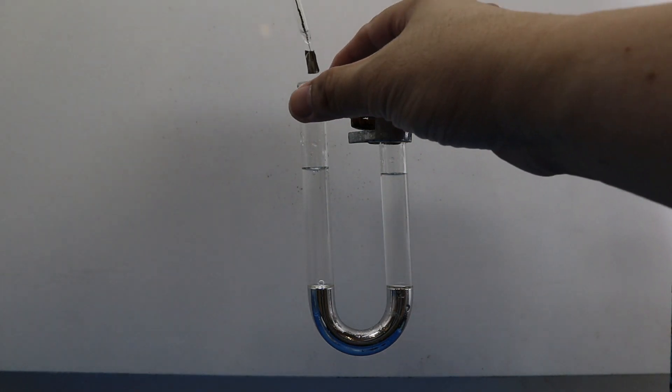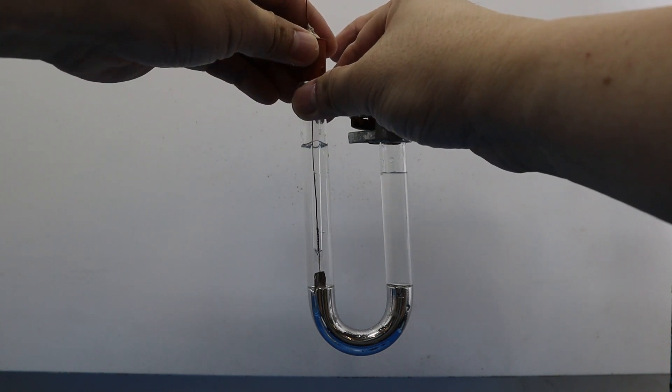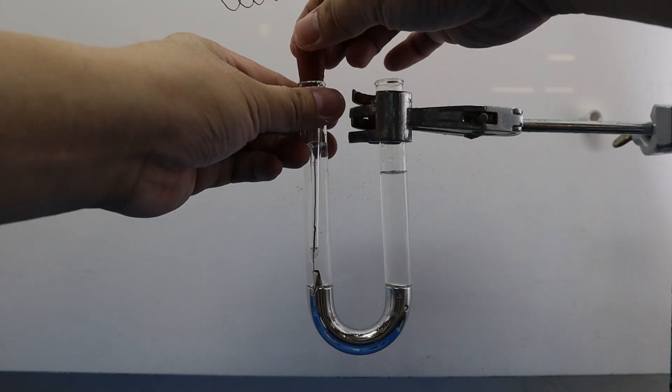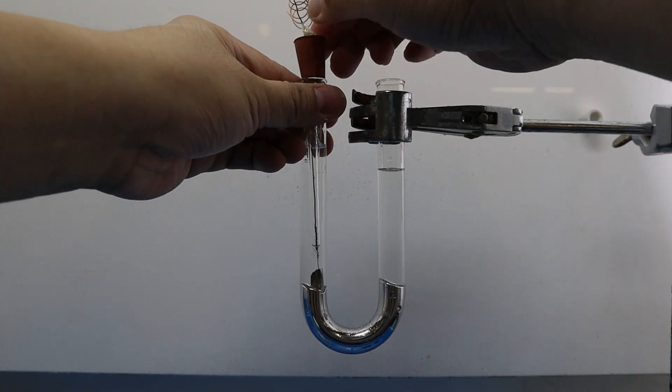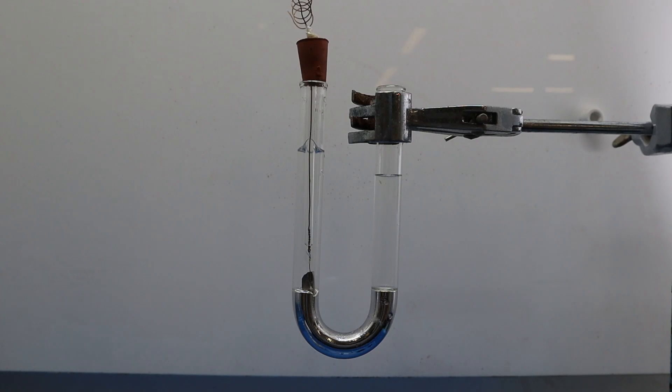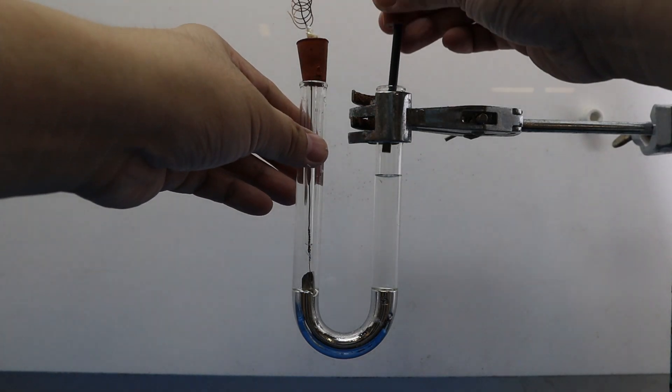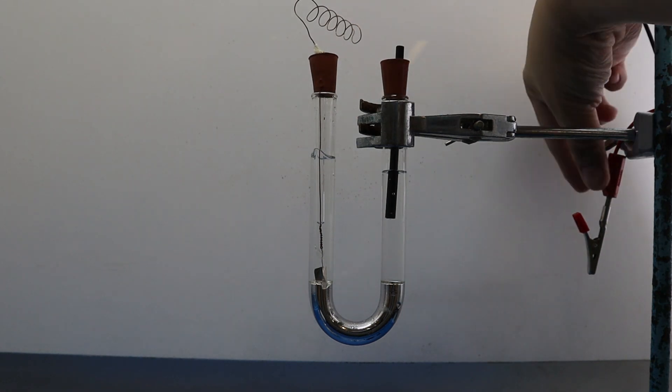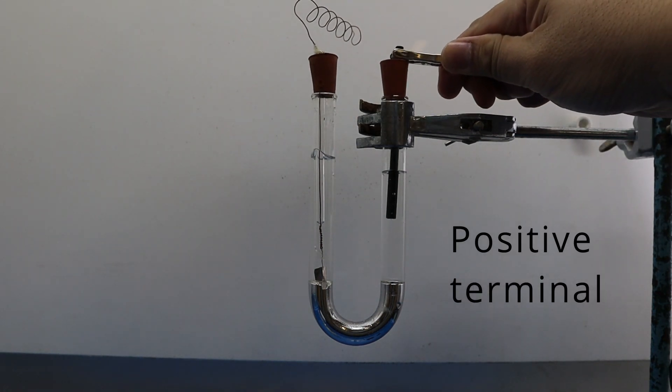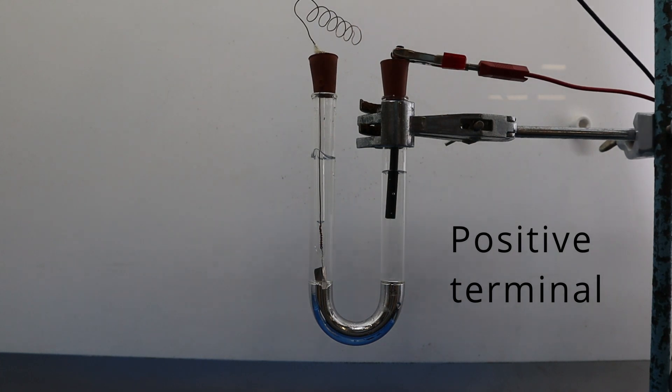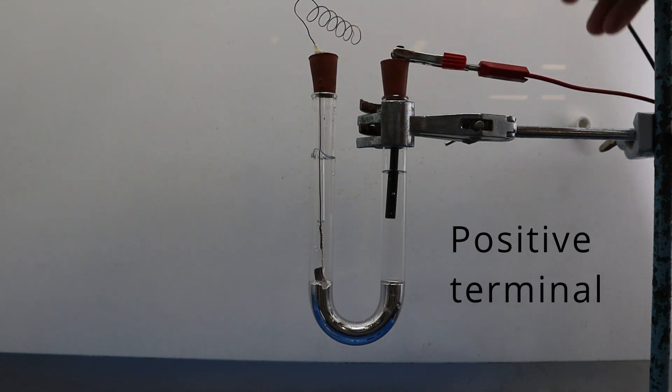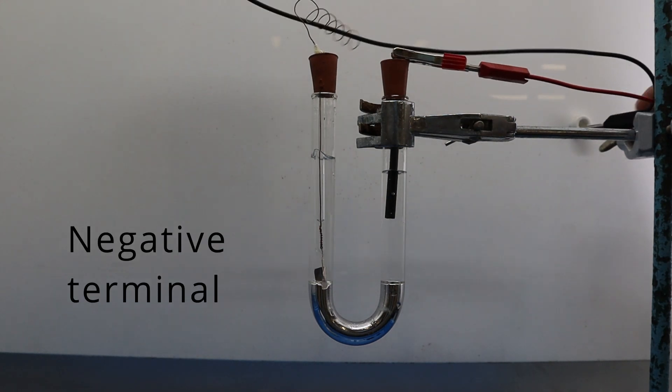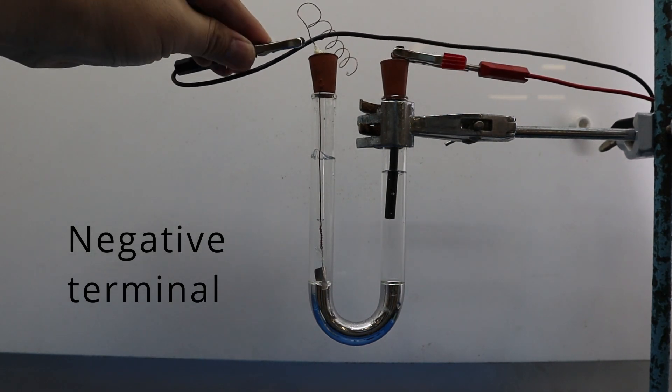Then a platinum plate is connected to the mercury through the deionized water. A graphite electrode is put into the sodium chloride solution. The graphite electrode is connected to the positive terminal of the power pack. Mercury is connected to the negative terminal of the power pack.